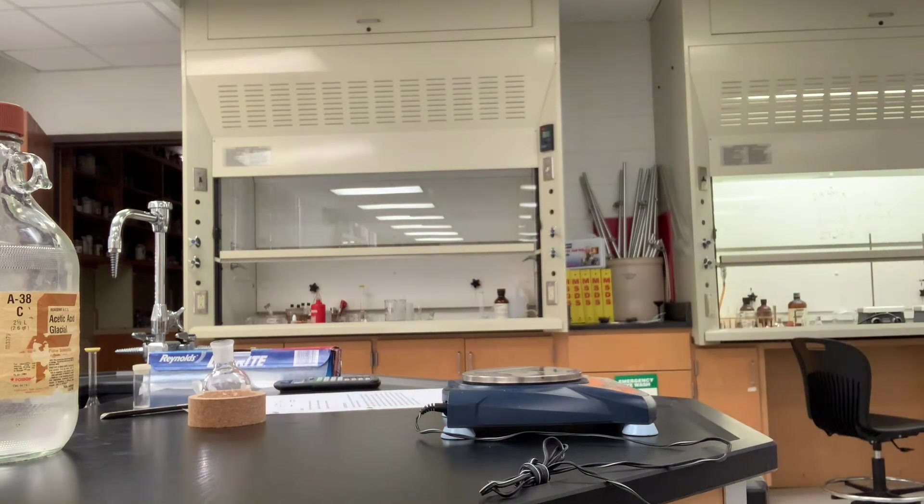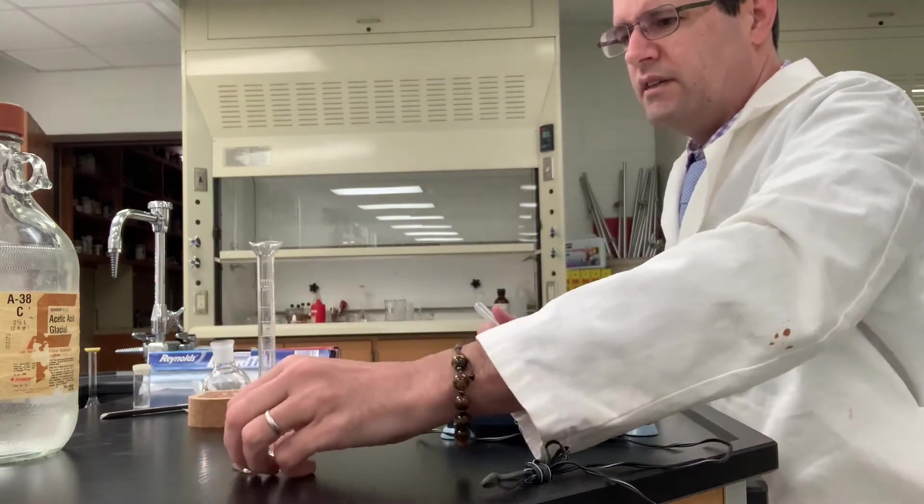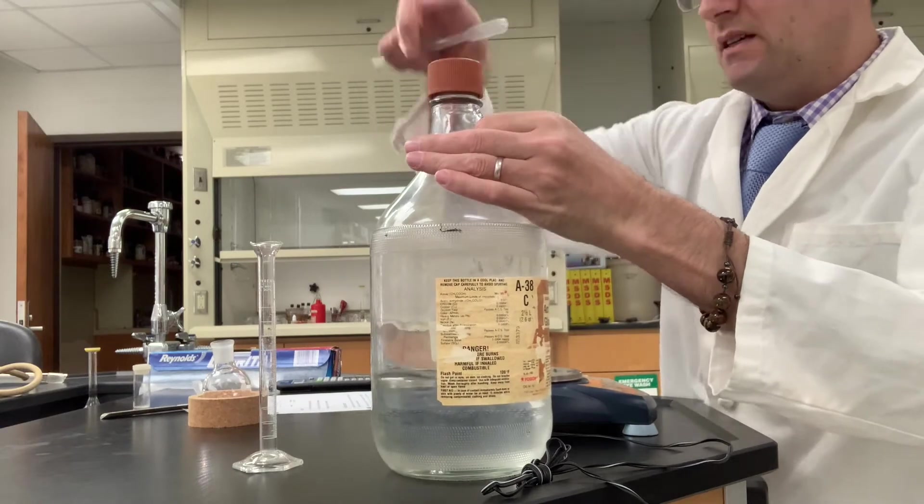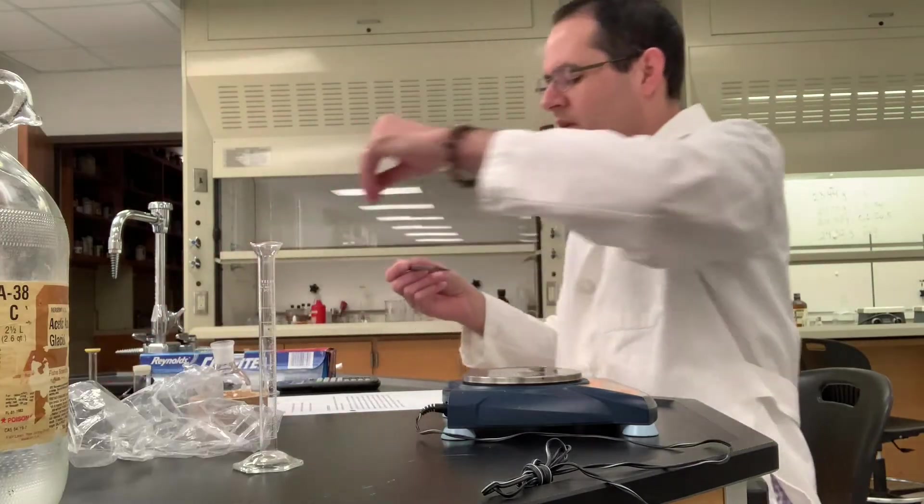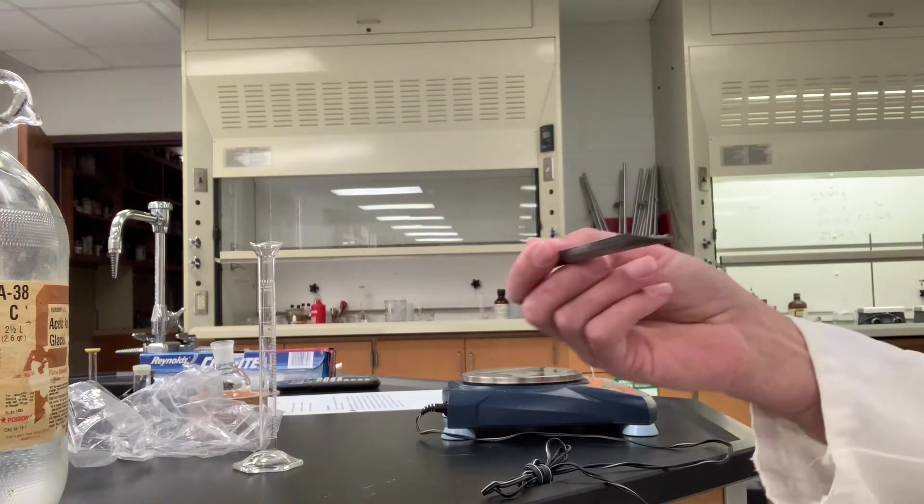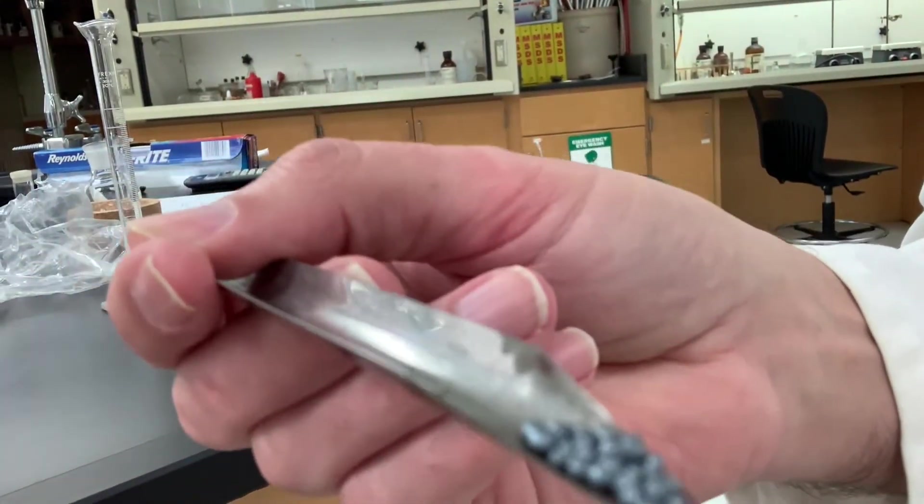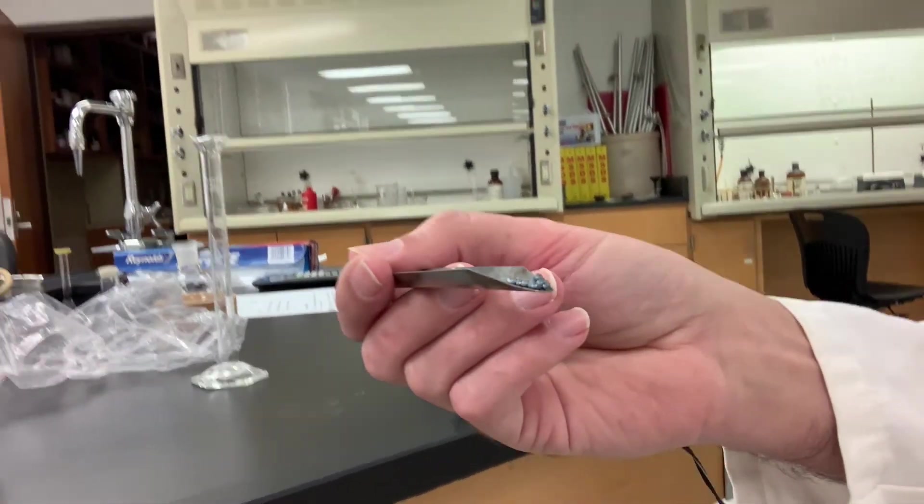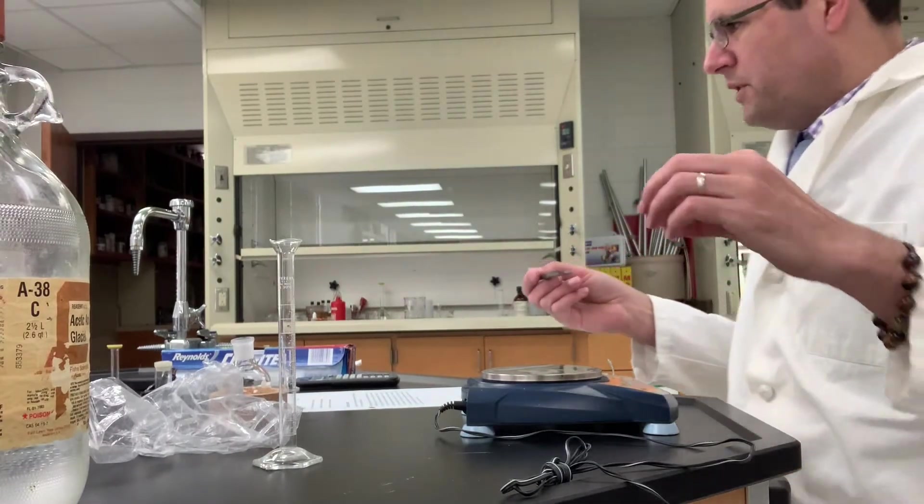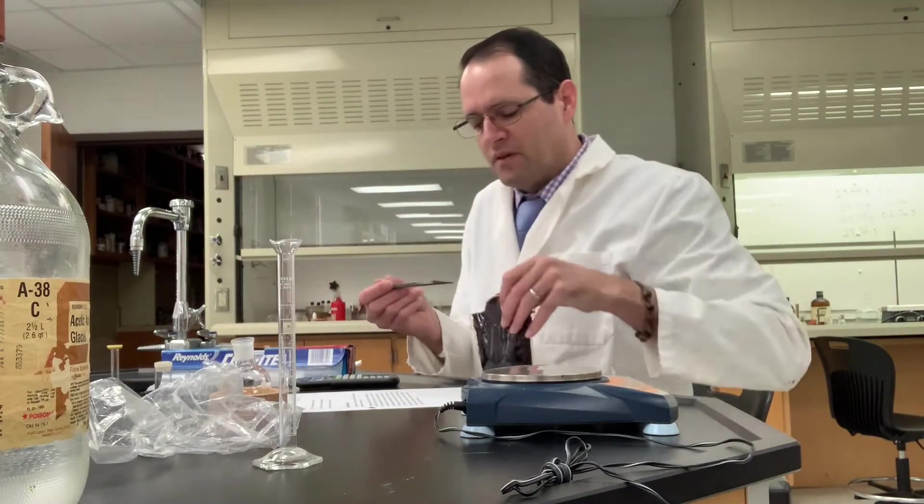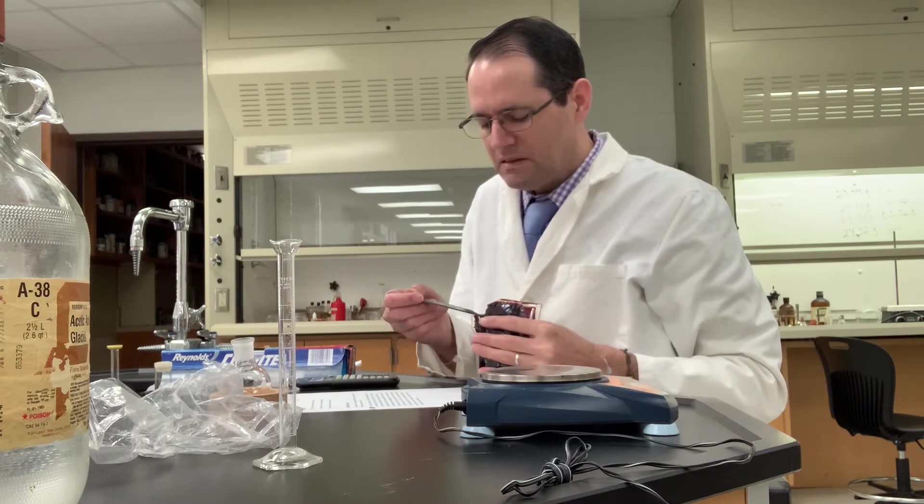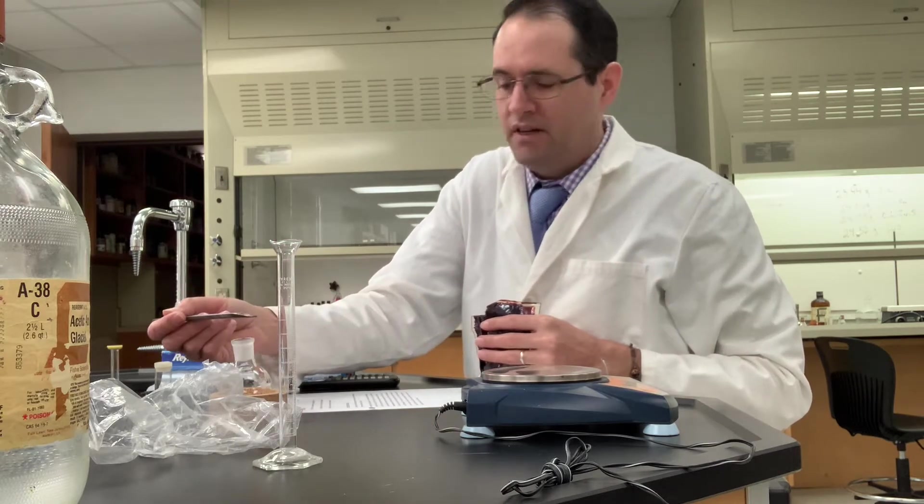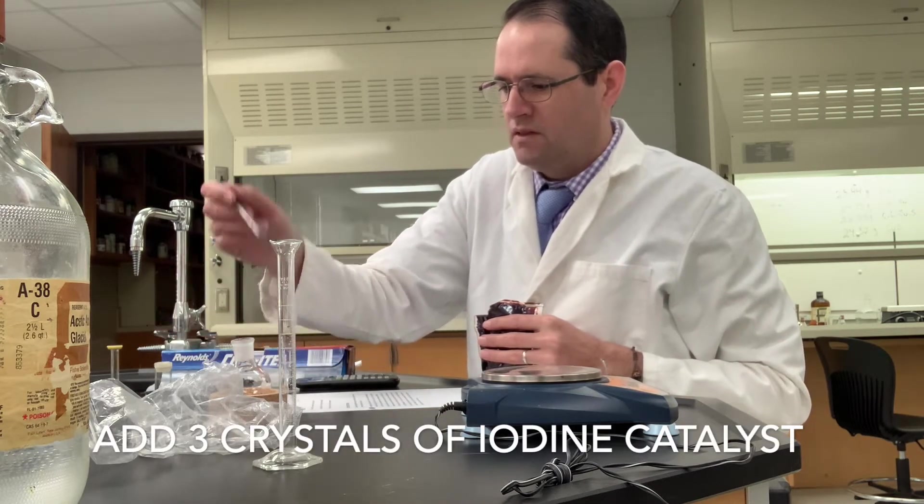Scale that down and we'll add the glacial acetic acid here. I need a couple crystals of iodine. This is what they're called prilled - we have these little beads, very small like BBs, gray color. We're supposed to add one to three of these to the flask and I'll add three.